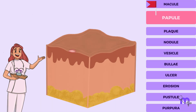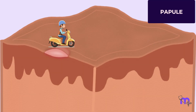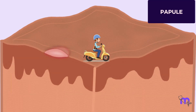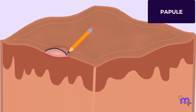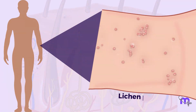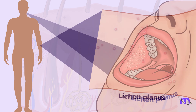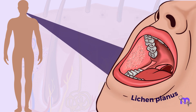The next one here is a papule, which rises above the surface of the skin and oral mucosa. They are always less than 1 cm in diameter and can be either slightly rounded or flat on top. Lichen planus is an example of a condition that can cause papules on both the skin and inside the mouth.